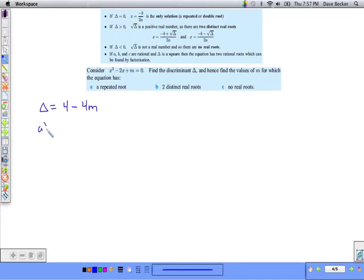For part a, I need a repeated root. A repeated root happens when delta equals 0. So I'm going to say 0 equals 4 minus 4m, and if I solve, negative 4 equals negative 4m, and m equals 1.